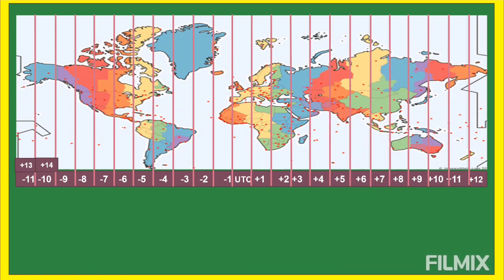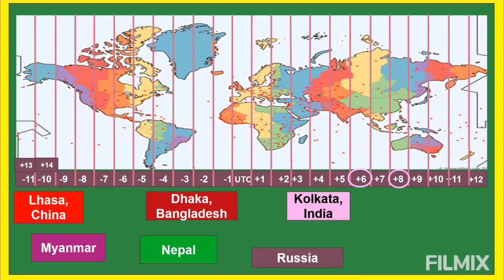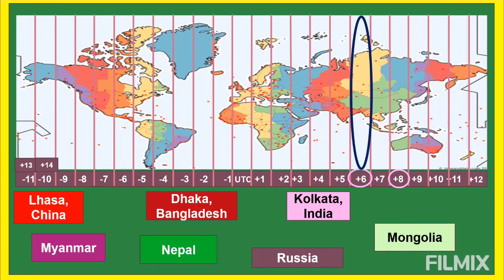Next is GMT+6, meaning these countries are six hours ahead of UTC. Comparing to Philippine time, these countries are just two hours behind the Philippines. These places include Lhasa (China), Myanmar, Dhaka (Bangladesh), Nepal, Kolkata (India), some parts of Russia, and Mongolia. There are still other places under GMT+6 that I didn't mention.